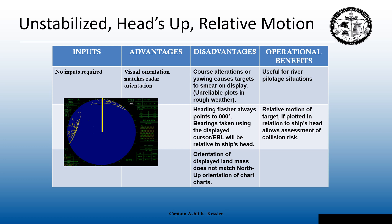Your heading flasher always points to zero-zero-zero — you're not always going north, but this is a relative concept. All bearings taken using your cursor or electronic bearing line will be relative to the head of the ship, and those need to be converted to true bearings to use on a plotting sheet, maneuvering board, or navigation chart. Unless you're heading north, this will not align with the navigation chart. It's a great radar — many inland tugboats use it — and if you can convert relative bearing to true bearing, you can use it to assess risk of collision.